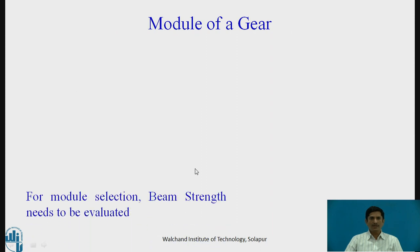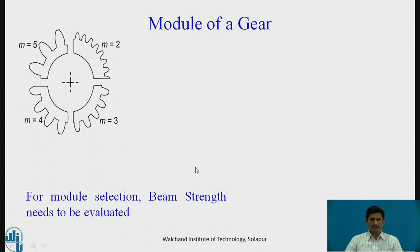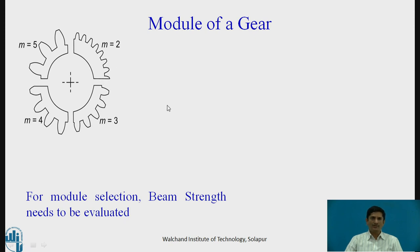The next part is the module of a gear. For gear design, we need to evaluate the beam strength. The modules are given as m equals 2, 3, 4, 5 — all these values are in millimeters.